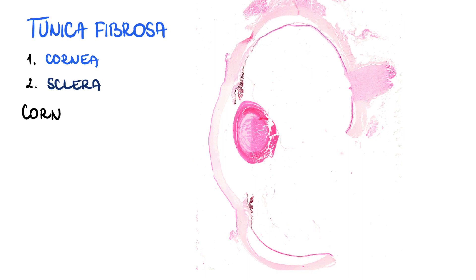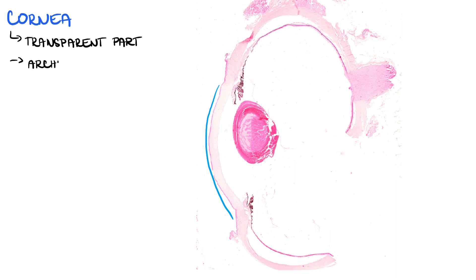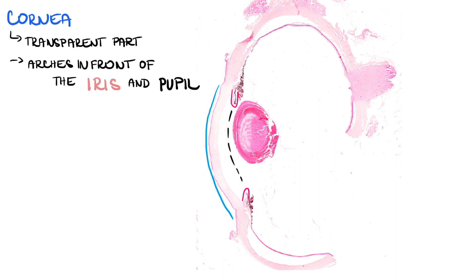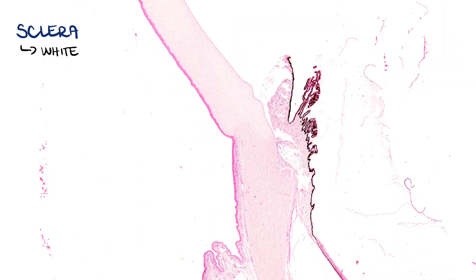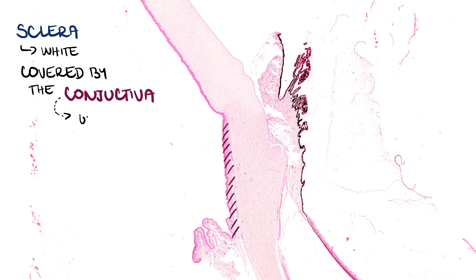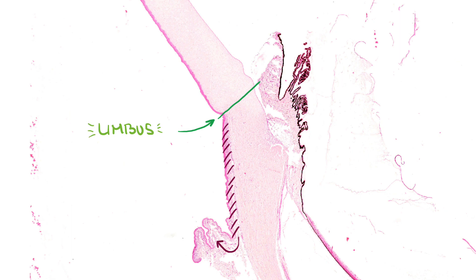Now let's look at the components of the tunica fibrosa — the cornea and sclera, called the corneal-scleral coat. The cornea is the transparent part of the eye, located most ventrally. When we look at the eye from the side, we see that it arches in front of the iris and pupil and continuously merges into the sclera in the area called the limbus. The sclera represents the white part of the eye. It is all around its circumference and in the front it is covered by the conjunctiva, which is continuous with the conjunctiva of the upper and lower eyelids. The border between the cornea and the sclera is the limbus. Thus, when we look into someone's eyes, we are actually looking through the transparent cornea and we can see the limbus all around, while the white part is the sclera, covered by conjunctiva.